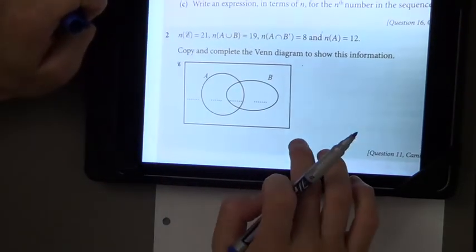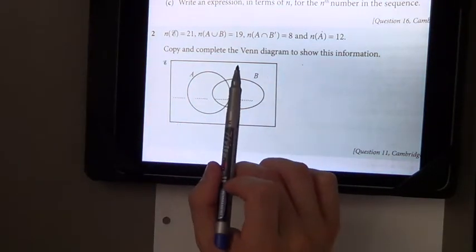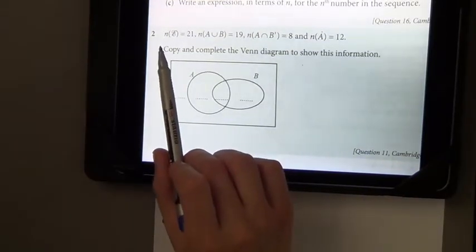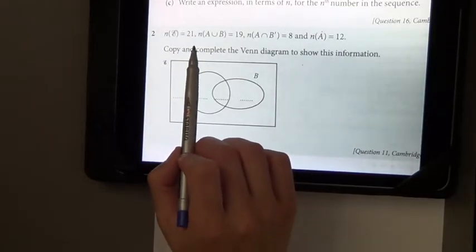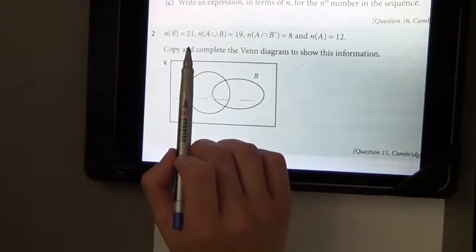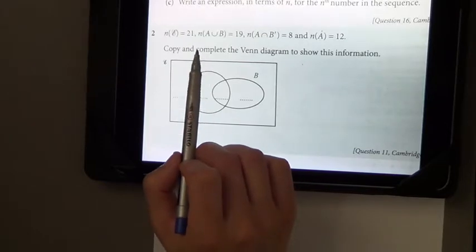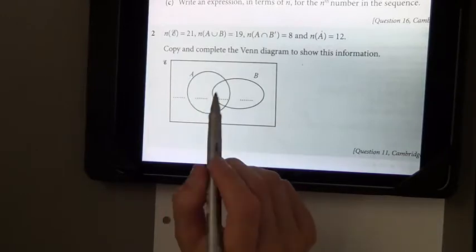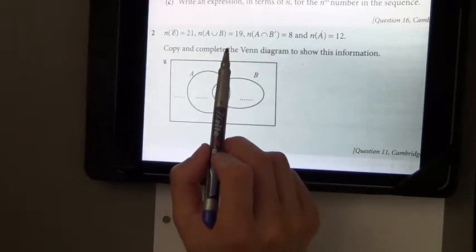Next question. I'll just zoom this up for you to see. Right? So, it says, copy and complete the Venn diagram to show this information. So, let me explain. So, first of all, we've got N signifies the number of elements in the universal set E. So, in this rectangular box. Then we've got, and that's 21. So, there's 21 elements. So, the number's going up to 21. Next one. We've got the number of elements in A, set A. And the number of elements in set B has to be 19.